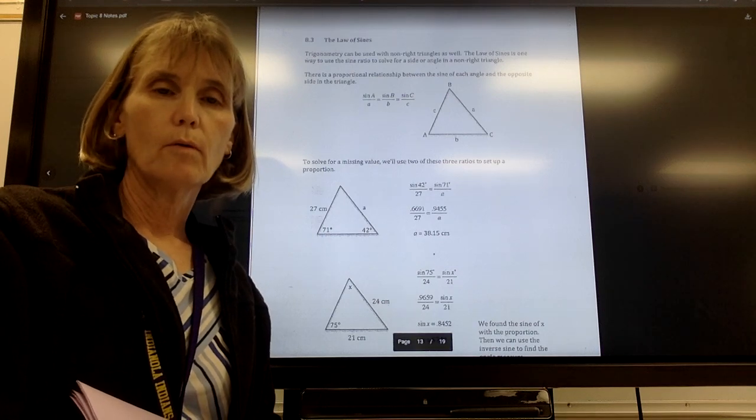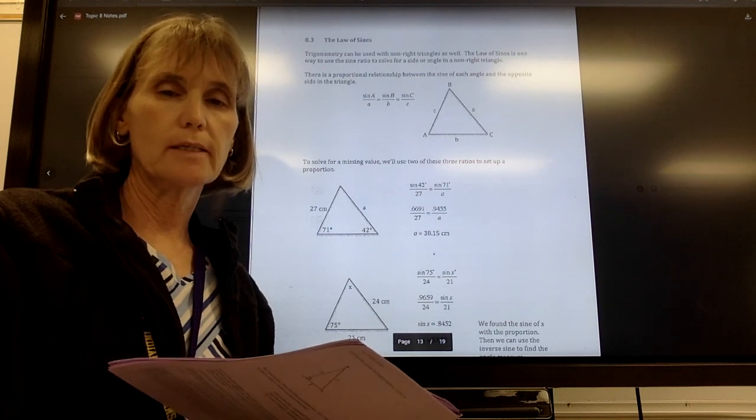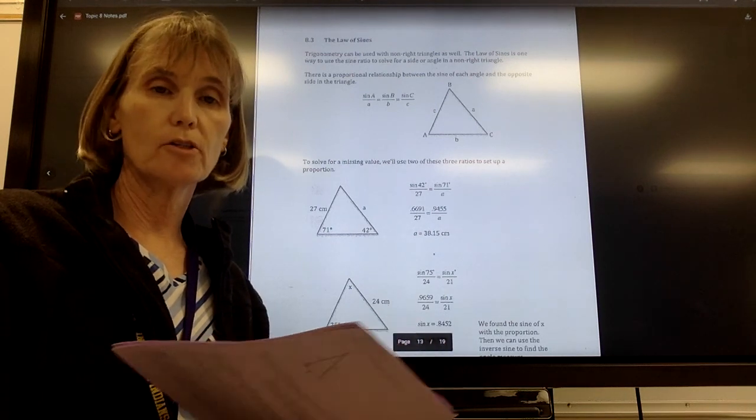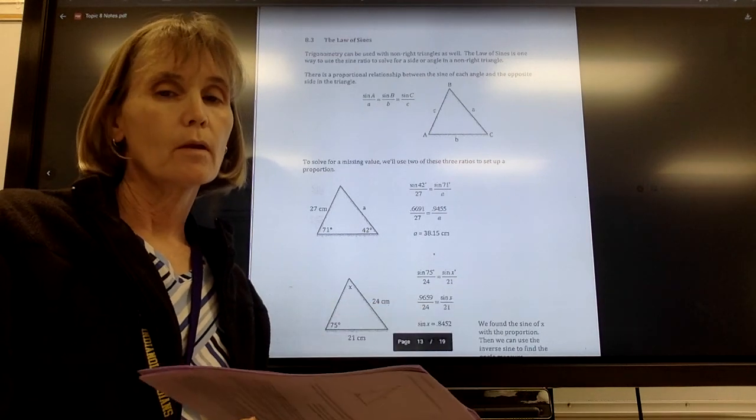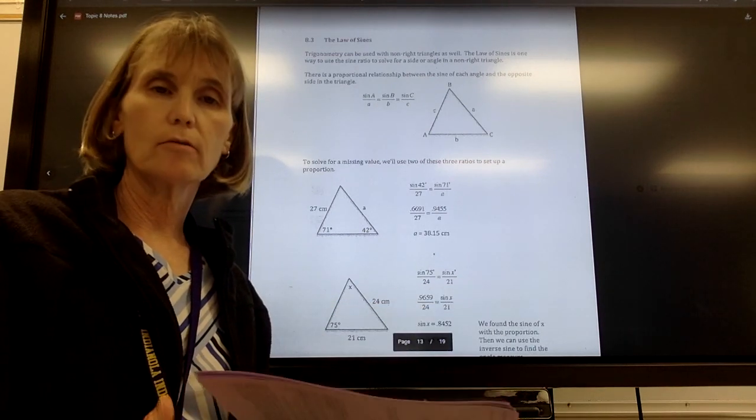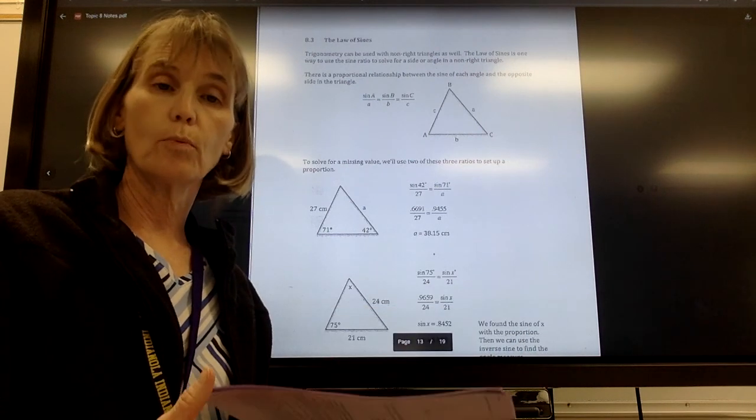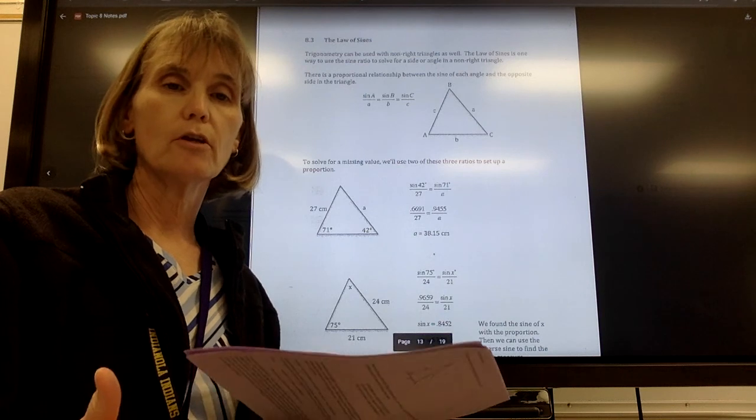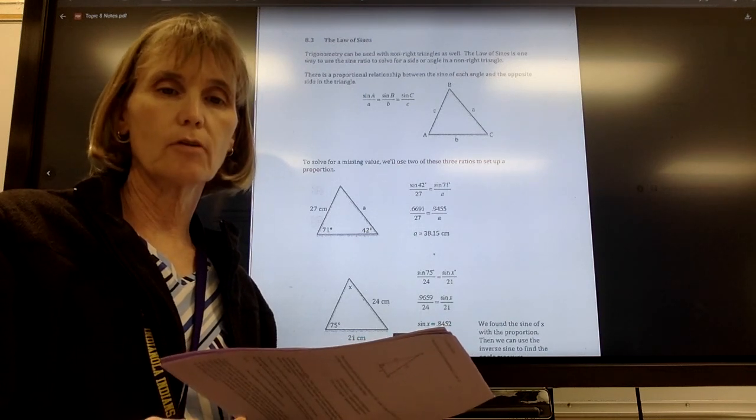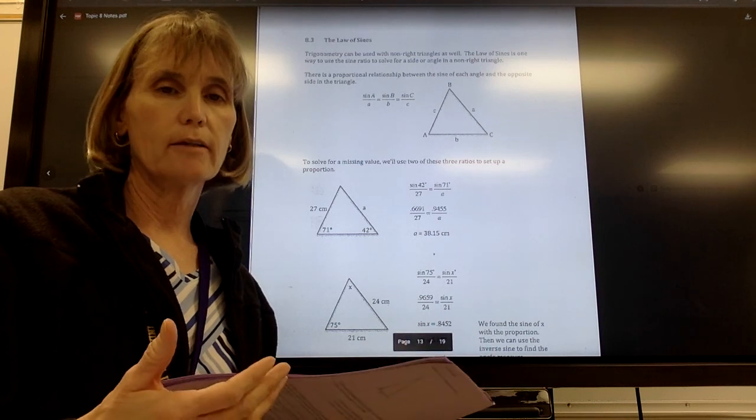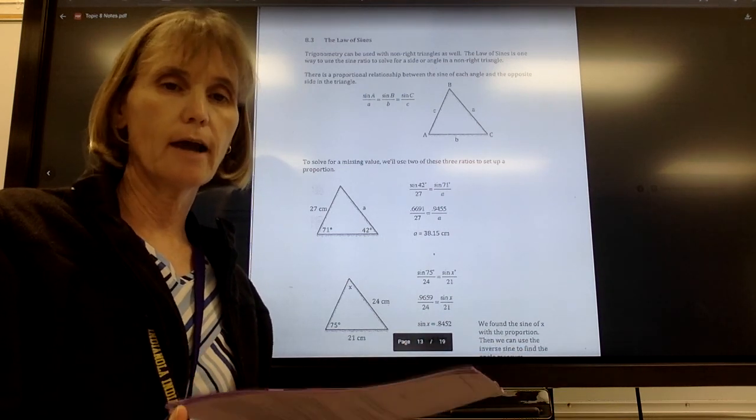Alright, so up to this point we have looked at a lot of different ways to find either a missing side length or a missing angle measure for a right triangle. We started with the Pythagorean theorem. We looked at some special triangles, the 45-45-90, the 30-60-90 triangle, where we only needed to know one side in order to determine the other two missing lengths. And then we looked at our trig ratios, the sine, the cosine, and the tangent, to look at the different relationships between opposite side, adjacent side, and hypotenuse.